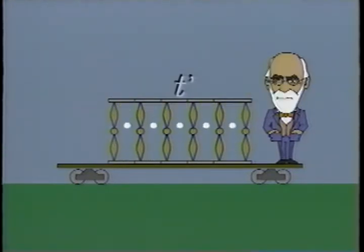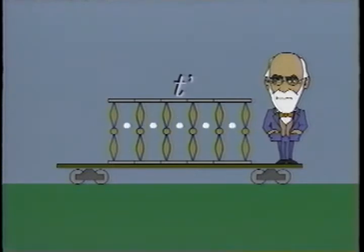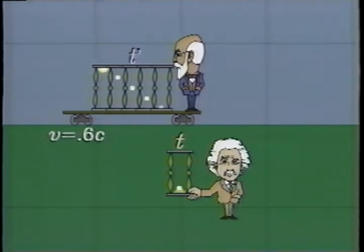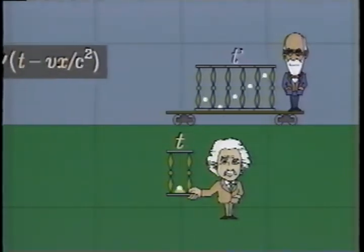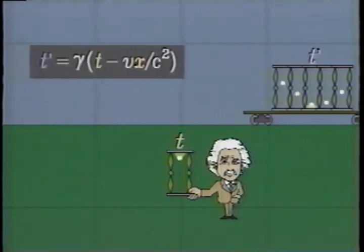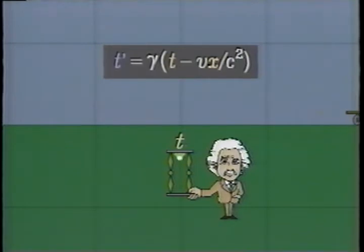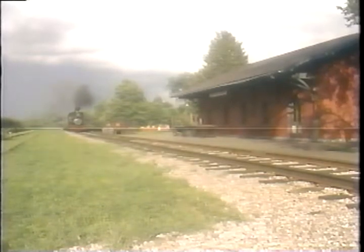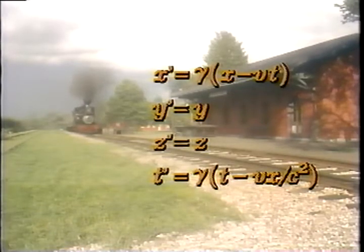As for time, although clocks can be synchronized in any one frame, their readings in another frame may depend on where they are. The time in the moving frame is gamma times the quantity t minus vx over c squared. Together, these equations are the Lorentz transformation.